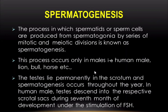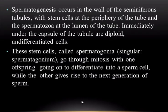In the human male, the testes descend into the respective scrotal sac during the seventh month of development under the stimulation of FSH hormone. Spermatogenesis occurs in the wall of the seminiferous tubule, with stem cells at the periphery of the tube and the spermatozoa at the lumen. Immediately under the capsule of the tube are diploid undifferentiated cells called spermatogonia, which go through mitosis — one offspring differentiating into a sperm cell while the other gives rise to the next generation of sperm.